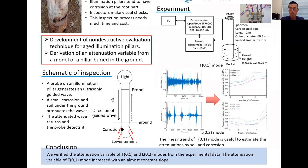The schematic inspection is like this. The probe is attached to the upper part of the pillar and generates the guided wave in this direction. The guided wave reflects at the root and returns to the probe. If the pillar has corrosion,